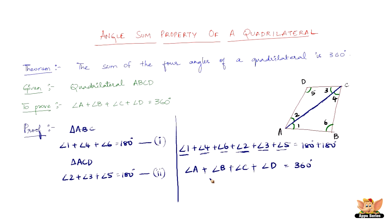So here we are. We have proved that the sum of the four angles of a quadrilateral is equal to 360 degrees.